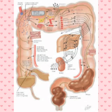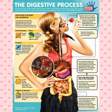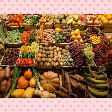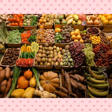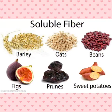Our bowels during digestion depend upon adequate fiber. Fiber includes plant sources like fruits and leafy vegetables. Soluble fiber is found inside the cell wall and can hold water; soluble fiber binds with water.